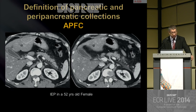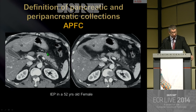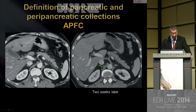Here is an example of interstitial edematous pancreatitis in a 52-year-old female. You have something which clearly looks like APFC: it is strictly around the pancreas, homogeneous, fluid density, and confined to the normal planes. The same patient two weeks later evolves to a normal CT appearance.